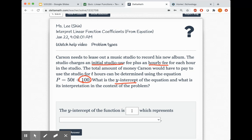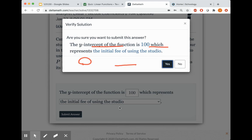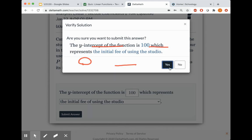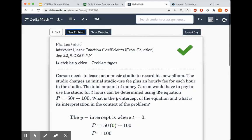So the y-intercept of the function we said is 100, which represents, let's see what options we have. The initial fee, here it is, the last one. So that's it. Submit answer, yes.